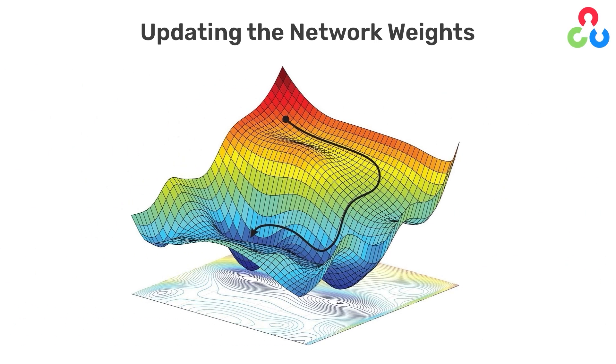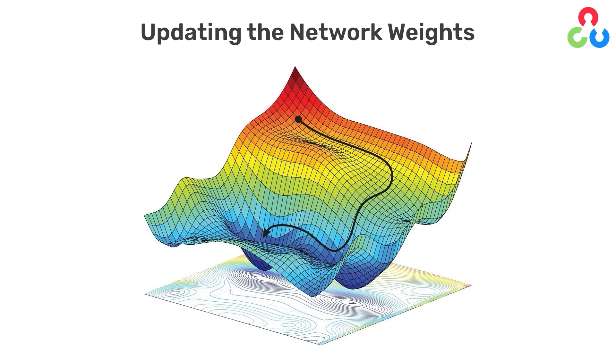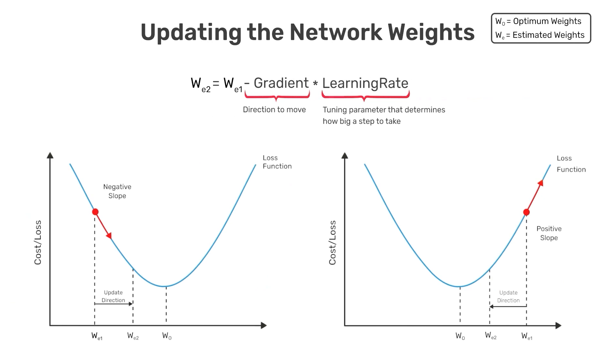In practice, the cost function has many dimensions and is not typically convex, but has many peaks and valleys. In the general case, the slope of the cost function is called the gradient and is a function of all the weights in the network. And therefore, the gradient is a vector in multidimensional space. But the approach used to update the weights is conceptually the same as described here.